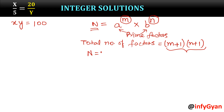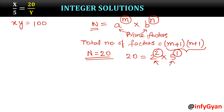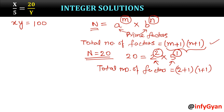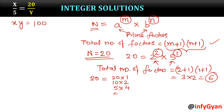For example, suppose I take n equal to 20. For the number 20, I can write it as 4 times 5, so 2 raised to the power 2, times 5. Now 2 and 5 are both prime factors, so m is 2 and n is 1. Total number of factors is (2+1) times (1+1), which is 3 times 2 — so 6 factors are possible. Let me show you: 20×1, 10×2, 5×4, 4×5, 2×10, and 1×20. These are the 6 possible factors.